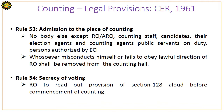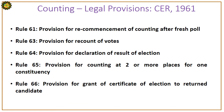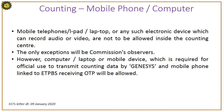Rule 54 – secrecy of voting: the Returning Officer shall read out the provision of Section 128 aloud before commencement of counting. Rule 55 is about scrutiny and inspection of EVMs before counting. Rule 56C is about actual counting. Rule 56D is about scrutiny of paper trail. Rule 57C is about sealing of voting machines. Rule 60 is about provision for continuous counting. Rule 61C covers recommencement of counting after fresh poll. Rule 64 covers recount of votes and declaration of result. Rule 65 covers counting at two or more places for one constituency. Rule 66 covers grant of certificate of election to the returned candidate.